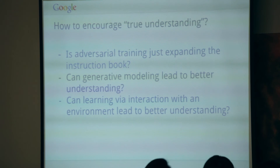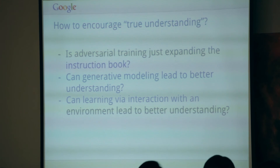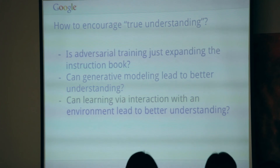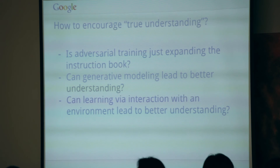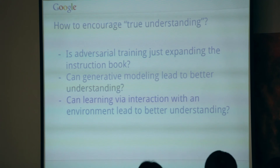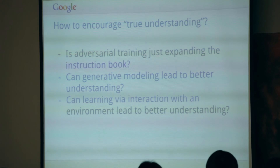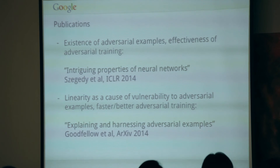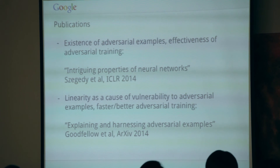There is a lot of work to do to figure out how to encourage true understanding. Training on adversarial examples is essentially just expanding the instruction book — the model isn't learning to figure out the underlying pattern and process any new example correctly. Several people think generative models have the potential to confer resistance to adversarial examples; existing generative models tested are not resistant, but other kinds could be. Training agents that interact with an environment and learn its dynamics might also help them learn the structure of the true task. Technical details and quantitative experiments are available in two publications from the team over the last year.